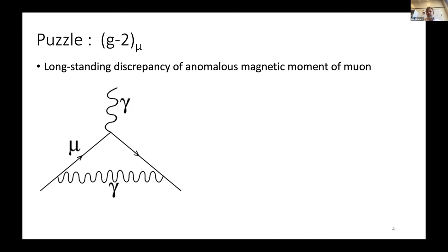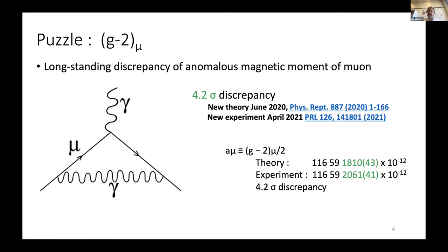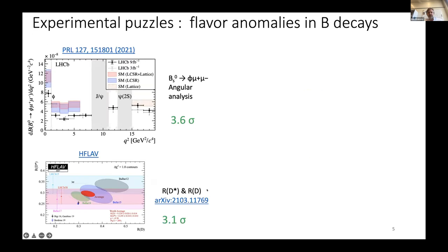There's another mystery, both experimental and theoretical: there's a longstanding discrepancy in the anomalous magnetic moment of the muon. We're talking about the muon's interaction with essentially the vacuum, as measured in terms of its anomalous magnetic moment. We now know there's a 4.2 sigma discrepancy, based on impressive progress both experimentally at Fermilab and previously at Brookhaven, and also from the theoretical community achieving similar precision.